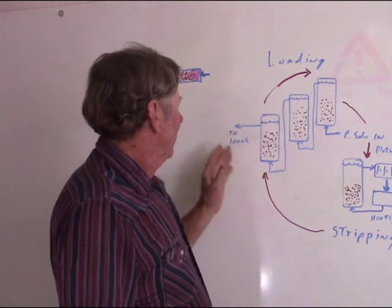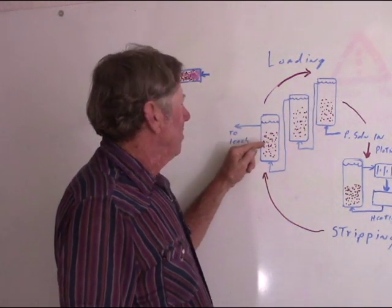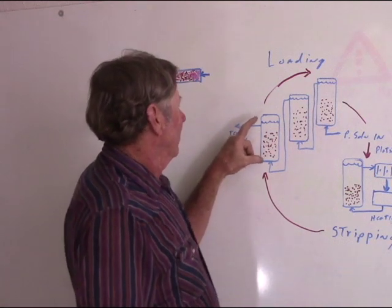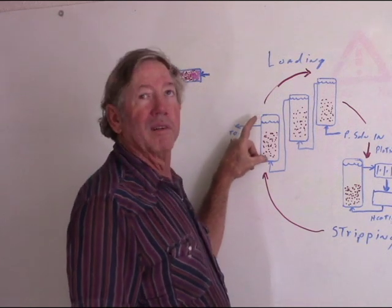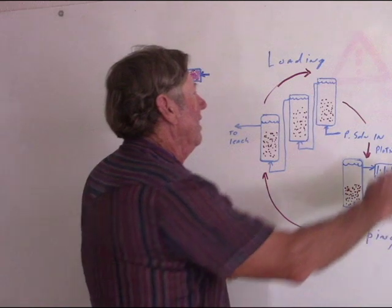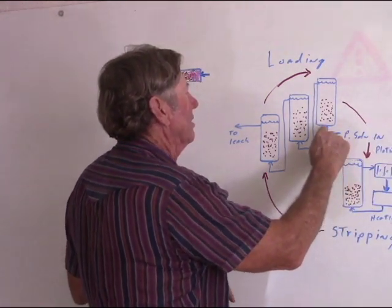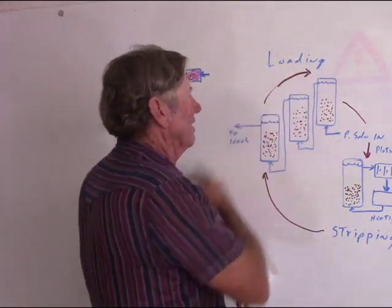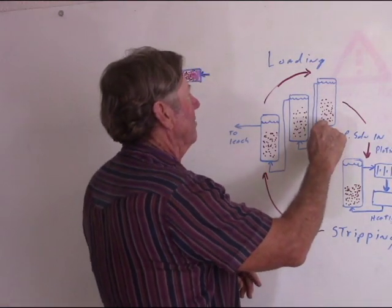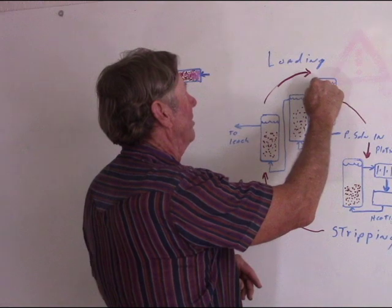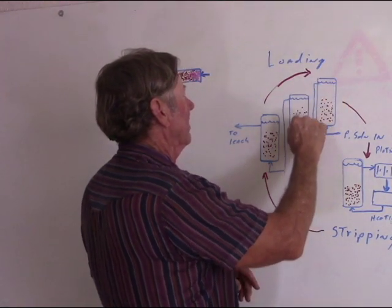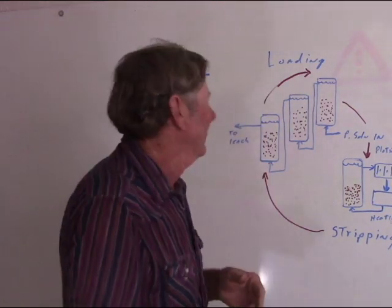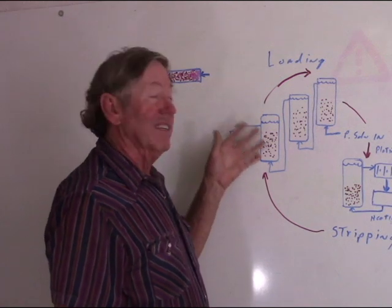When you have fresh carbon, that would be put in the last column in the circuit — this would be the cleanest carbon, the least loaded. The solution would come in from the leaching circuit. In this case, we had gravity flow to maintain flow through everything, so the columns are literally physically higher. The solution comes in, goes through the carbon in the first column, overflows, comes down, goes to the second column, overflows, comes down to the next. We had four columns. The last column would have the least loaded carbon.